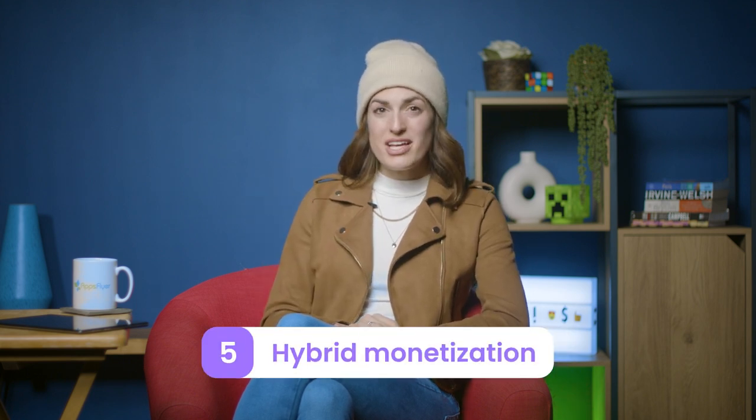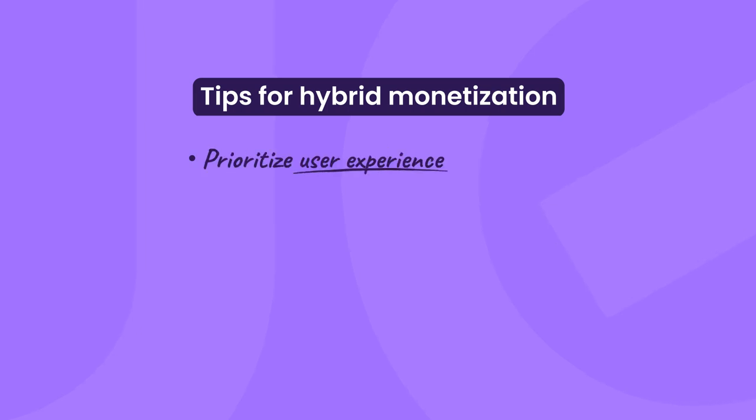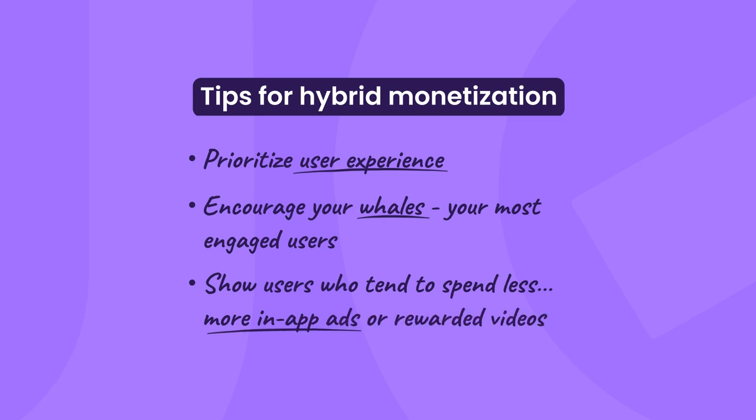Lastly, strategy number five is hybrid monetization. This strategy allows you to use several different models to maximize your revenue. It's a great way to generate diverse revenue streams from two types of users: those who are likely to make a purchase, usually only between 5% and 10% of users, and those who are less inclined to make a purchase. The hybrid model is mainly used by mobile games that combine in-app purchases and in-app advertising. Users may have the option to purchase a new life and see a video ad when they complete a new level. When thinking of hybrid monetization, think about who your users are and make sure you prioritize their user experience. Encourage your whales — the most engaged users — to make more valuable in-app purchases, and show users who tend to spend less more in-app ads or rewarded videos.